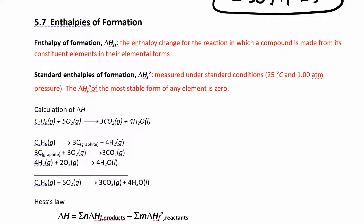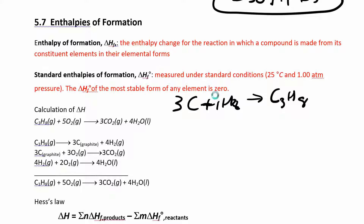Suppose I wanted to look at the enthalpy of formation of C3H8. The elements that make it up are carbon and hydrogen. The elemental form of hydrogen is H2 — remember, that's diatomic. So to balance this, I would put a 3 in front of carbon and a 4 in front of H2. That would be the formation reaction, and it would have an enthalpy associated with it — the delta H of formation of C3H8.